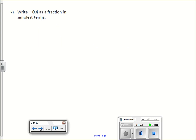Negative 0.4. The 4 is in the tenths place. So it's negative 4 tenths. Again, they're both even. I can divide by 2. And I would get negative 2/5, which is in reduced or most simplest terms.